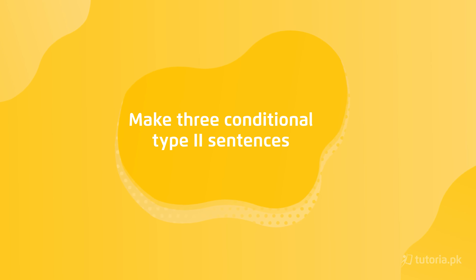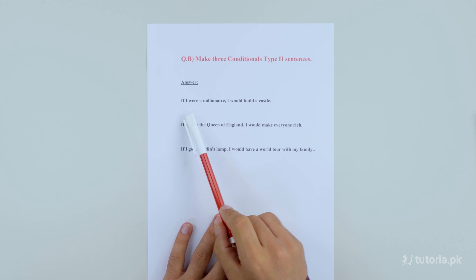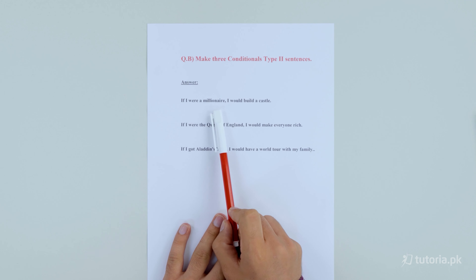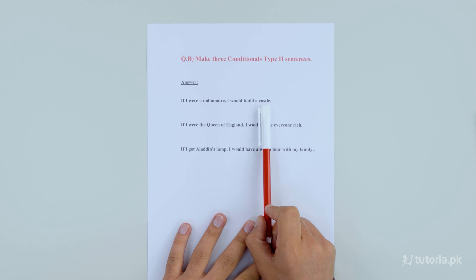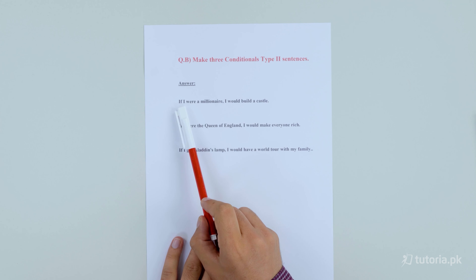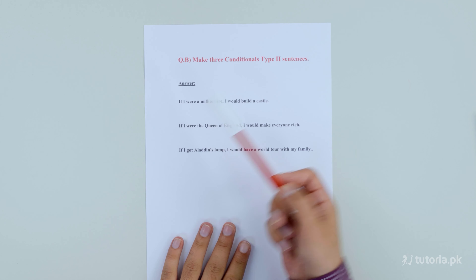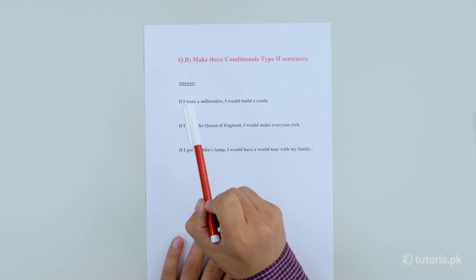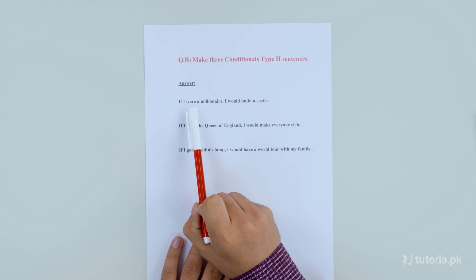The next question is also about making conditional sentences. The writer asked us to make three conditional sentences. Let's see the first: 'If I were a millionaire, I would build a castle.' Here you can easily see that the condition — 'if I were a millionaire' — is not real. There is no real possibility.